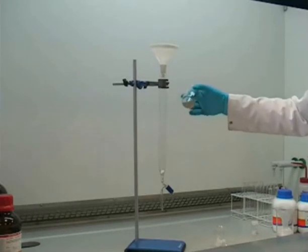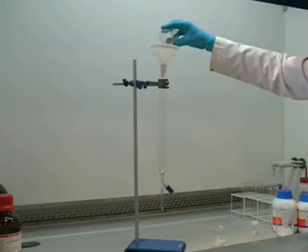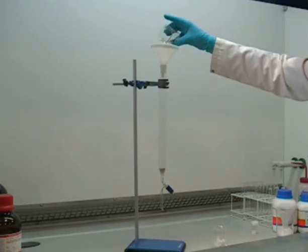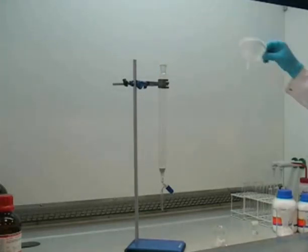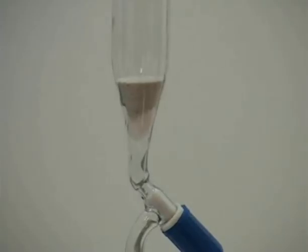Next, a small amount of sand is poured in to a depth of about 1cm. Here you can see the sand forming a level surface on top of the cotton wool.